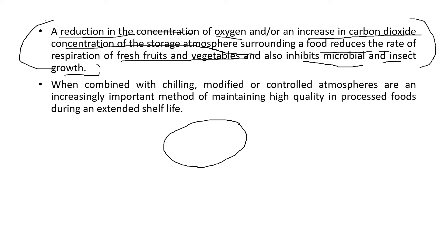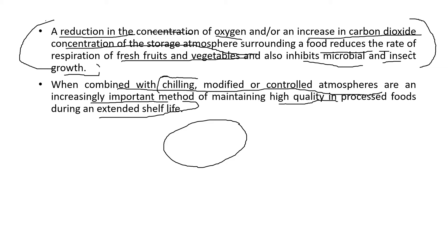When combined with chilling, modified or controlled atmosphere are increasingly important methods of maintaining high quality in processed food during an extended shelf life. These methods of preservation — chilling or modified or controlled atmosphere — also help in the extension of shelf life, so food can be kept in a fridge or elsewhere for a longer period without getting spoiled.